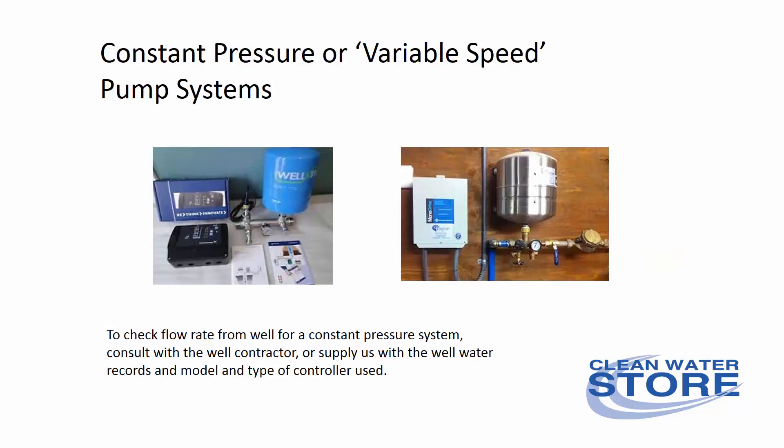Some folks have a submersible pump that has variable speed, referred to as a constant pressure system. You can identify this because typically you would see a small expansion tank, and there would be a controller and pressure sensor instead of the larger standard pressure tank and pressure switch. This video doesn't pertain to you if you have this system — it's best to consult your well contractor to find out the specs on your flow rate for this type of system.